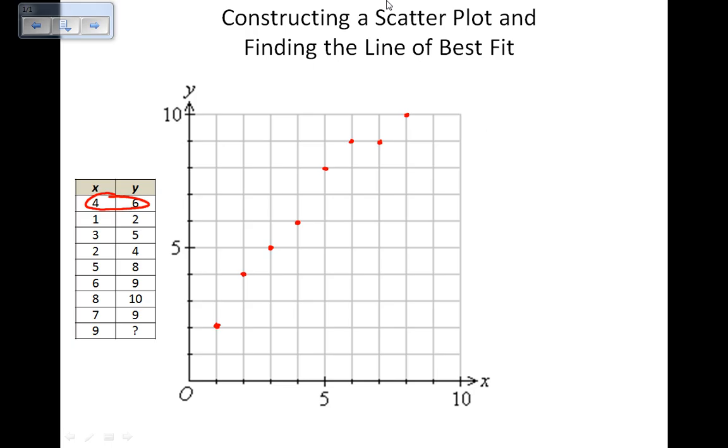So my trend line approximately goes through those points and up like that. Now that's an approximation, of course. When you do this by hand, you're never going to get it exactly correct. But the approximation lets us select two points that we can then use to find the equation of the line. So this is my line of best fit.